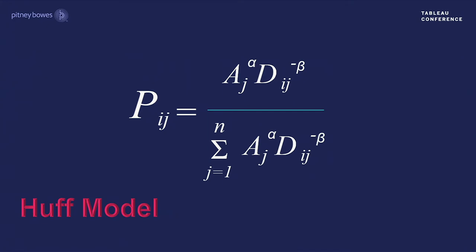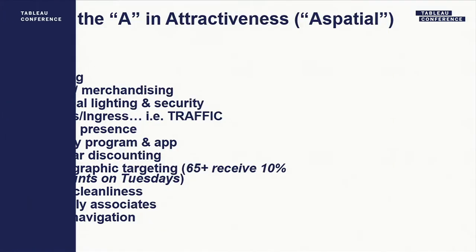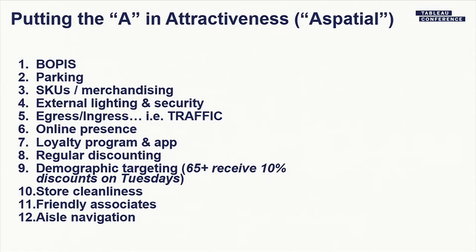A has everything to do with data and how you employ data in either a retail setting or otherwise, because A talks about all the other stuff that you would want to do when choosing a retail outlet. And those are called attractiveness features. What Huff proposed was that, yeah, distance is cool, but really what you're doing is looking at every other piece of data that gives you the probability that you will visit this particular retail outlet.